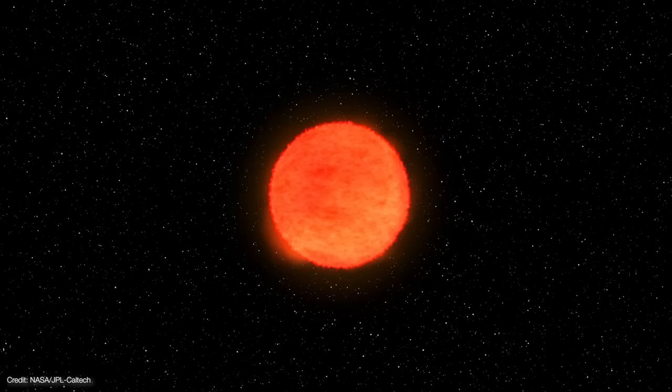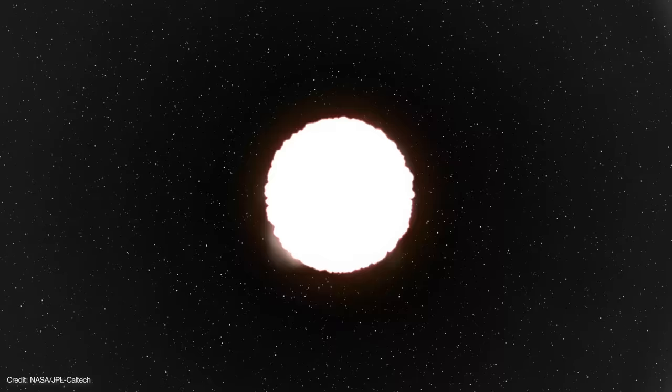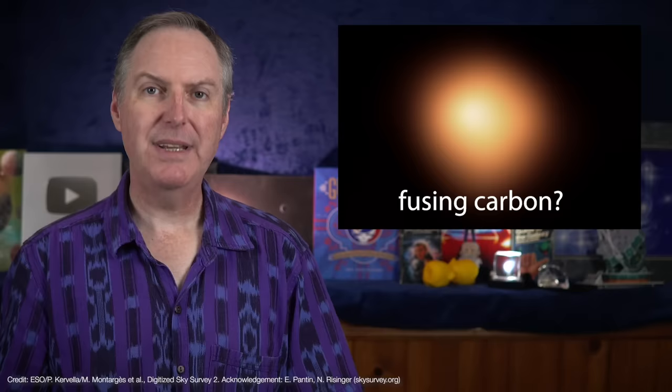When the core becomes iron, it ceases to produce energy and collapses. The star's interior implodes and rebounds in a supernova explosion. It's never a question of if Betelgeuse will go supernova, but when.